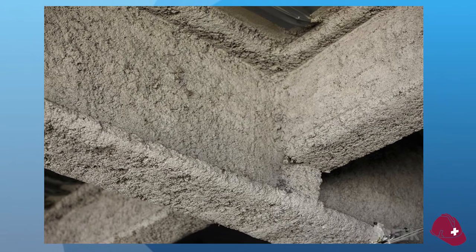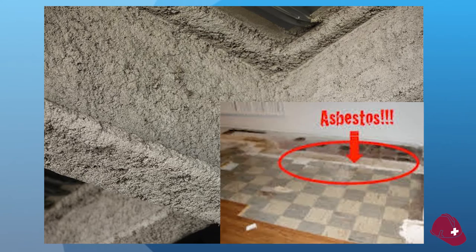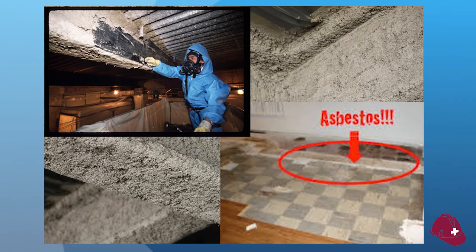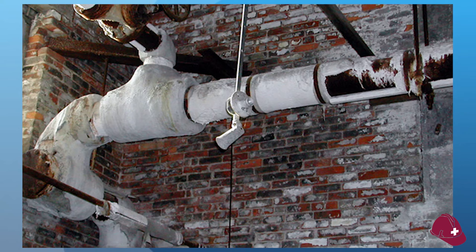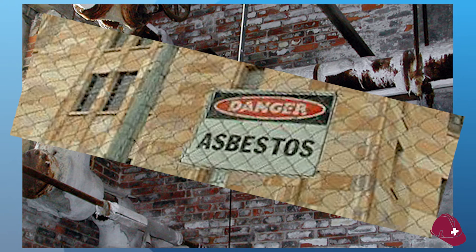You can come in contact with asbestos through the demolition of certain structures, construction, repair, maintenance, or renovation, spills and emergency cleanups, transportation, disposal, storage, and housekeeping, as well as activities on site of a job where asbestos-related activities are being performed.